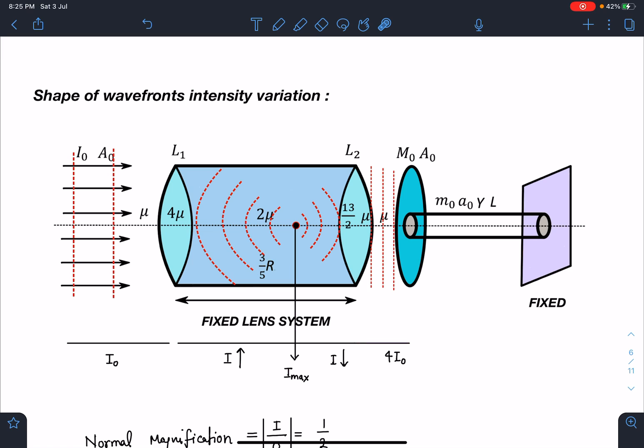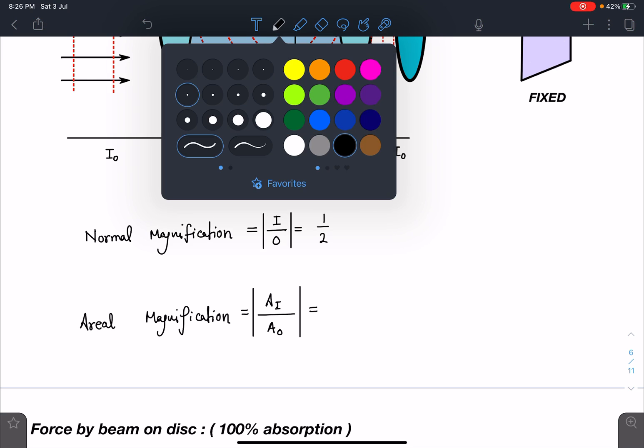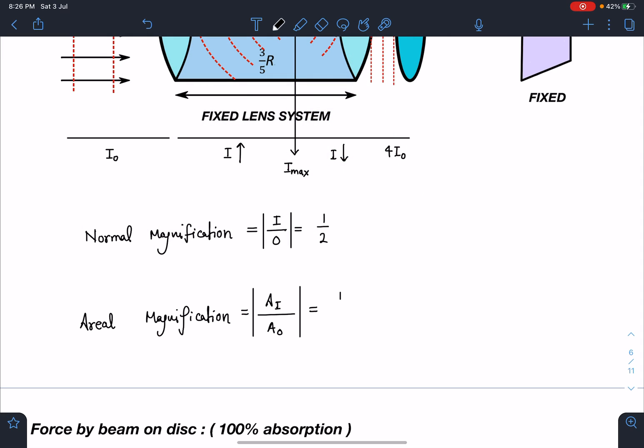I hope this part is clear to you. Otherwise normally if you directly feel it, you may get exactly reverse result. Now the normal magnification is just the radius ratio i/o we can apply, so it is 1/2. And areal magnification is area of the beam after refraction divided by area of the beam before refraction, so that will give you 1 is to 4.